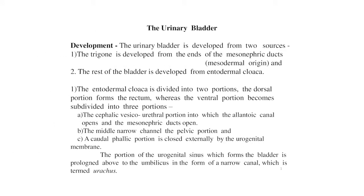The urinary bladder is developed from two sources. The trigone is developed from the ends of the mesonephric ducts — mesodermal origin. The rest of the bladder is developed from the endodermal cloaca. The endodermal cloaca is divided into two portions: the dorsal portion forms the rectum, whereas the ventral portion becomes subdivided into three portions. First is the cephalic vesico-urethral portion, into which the allantoic canal opens and the mesonephric ducts open.